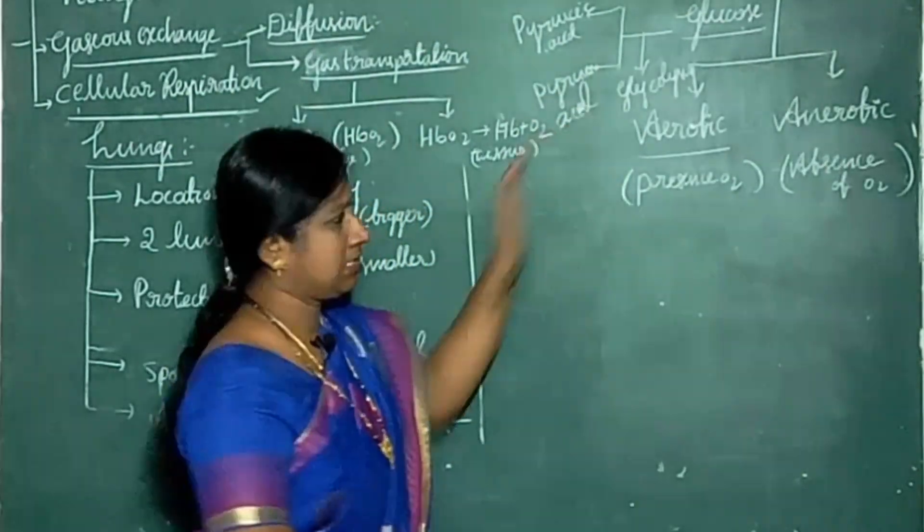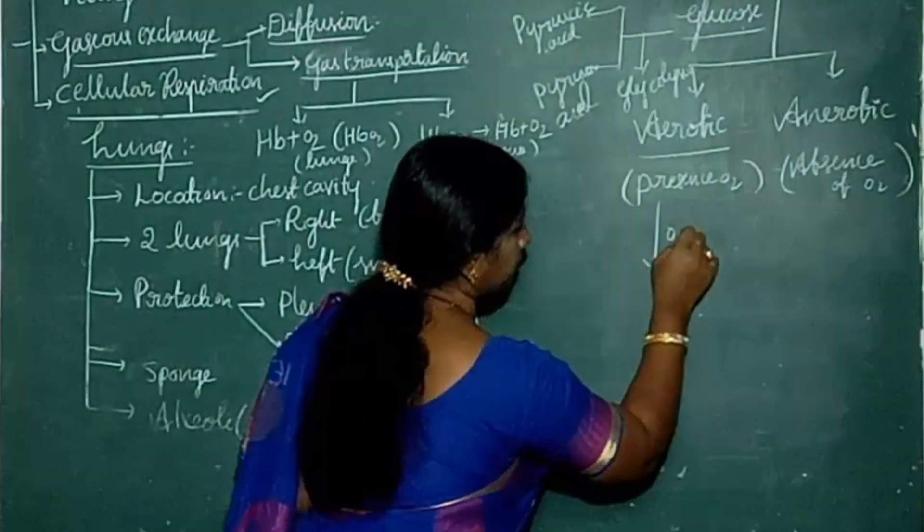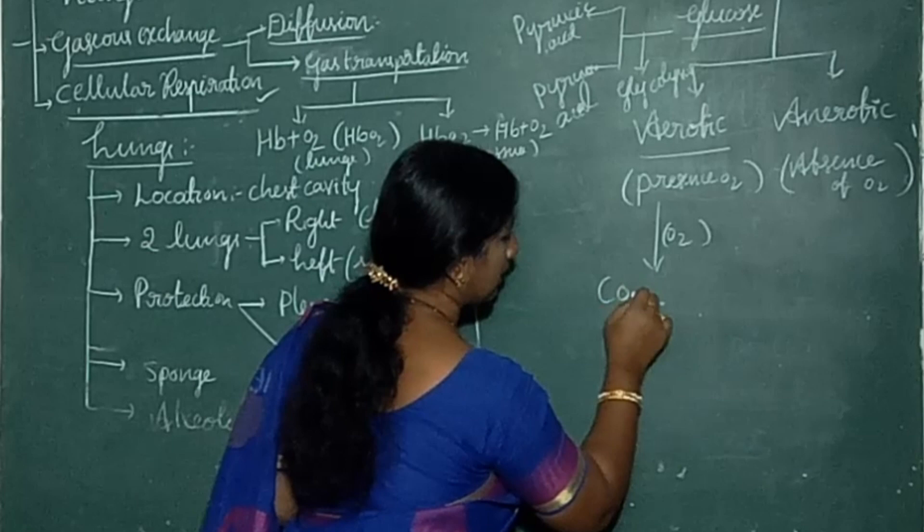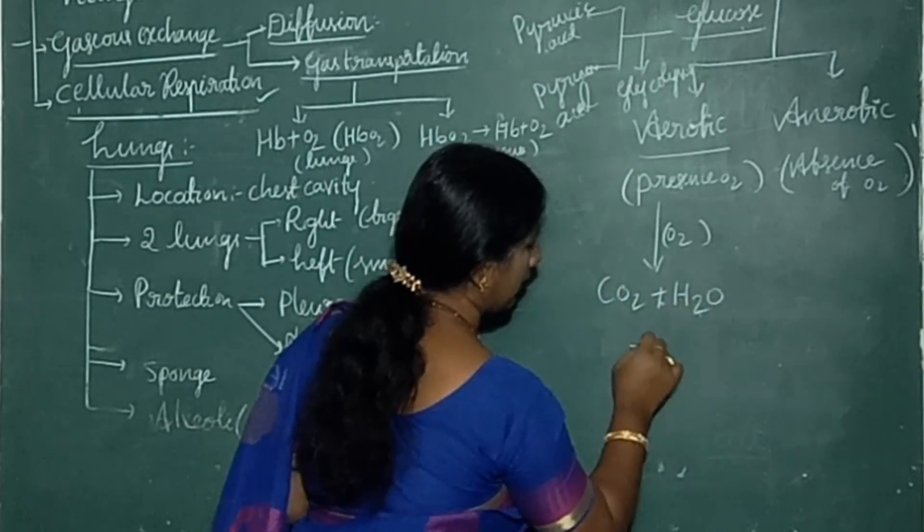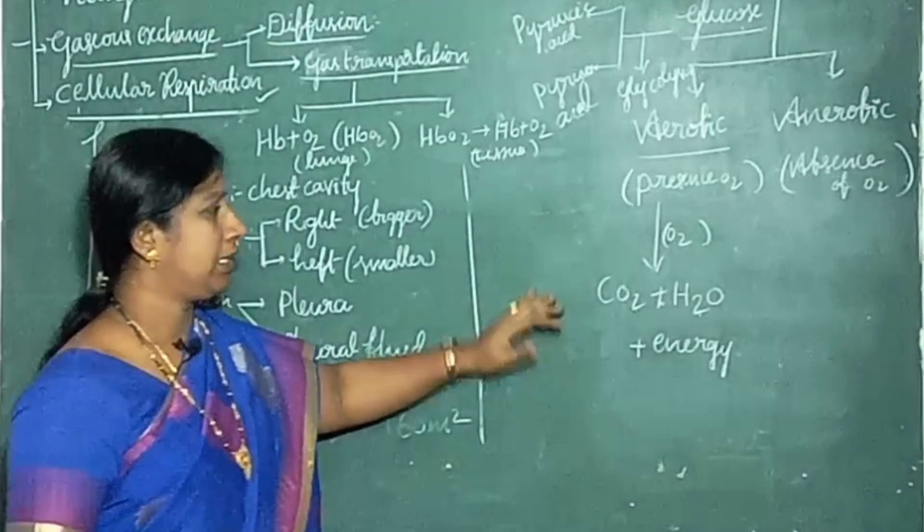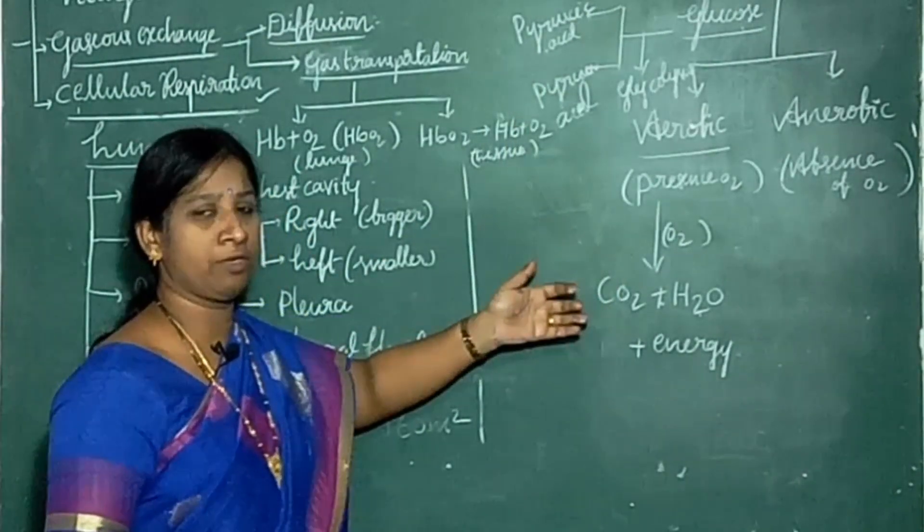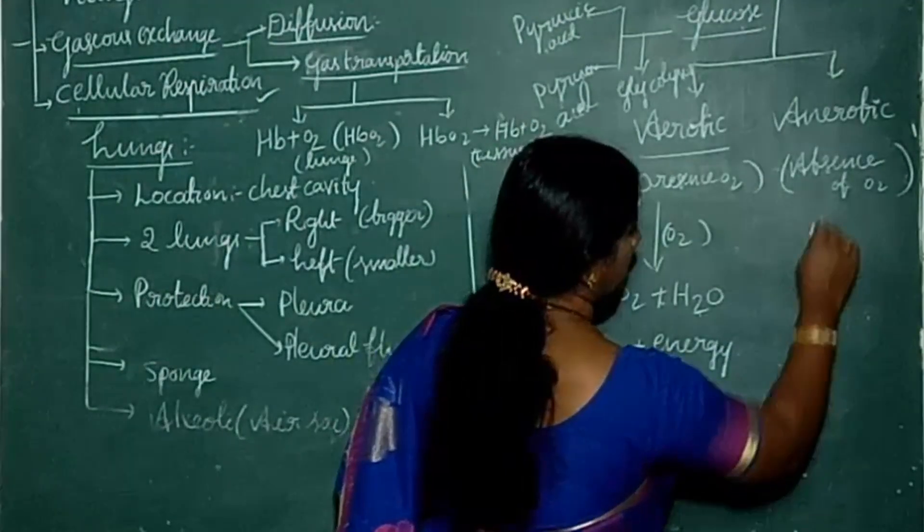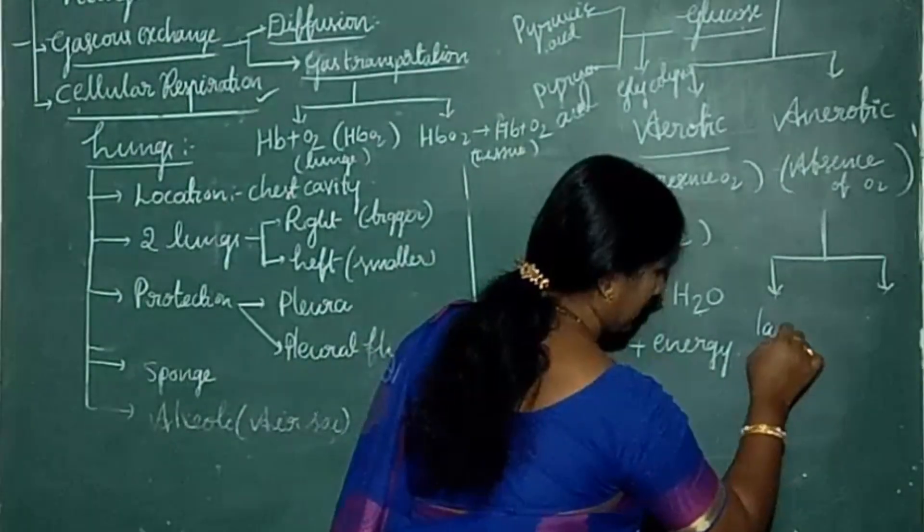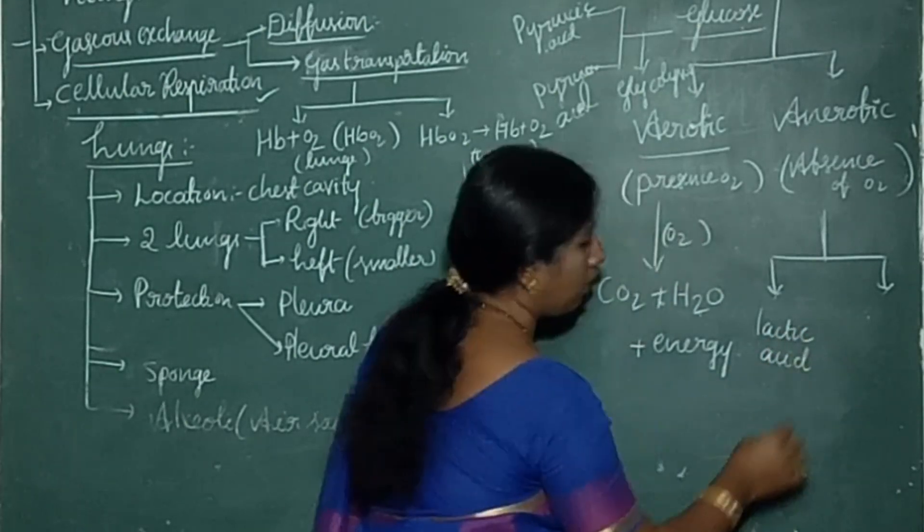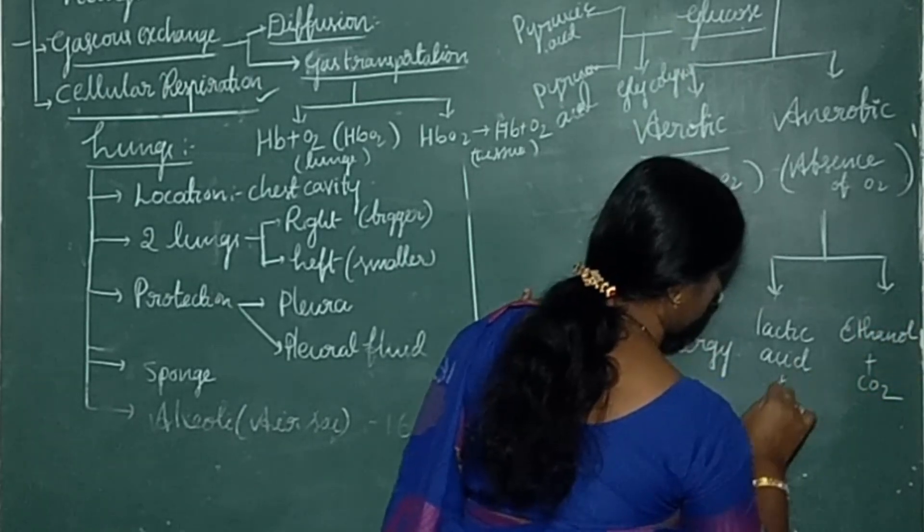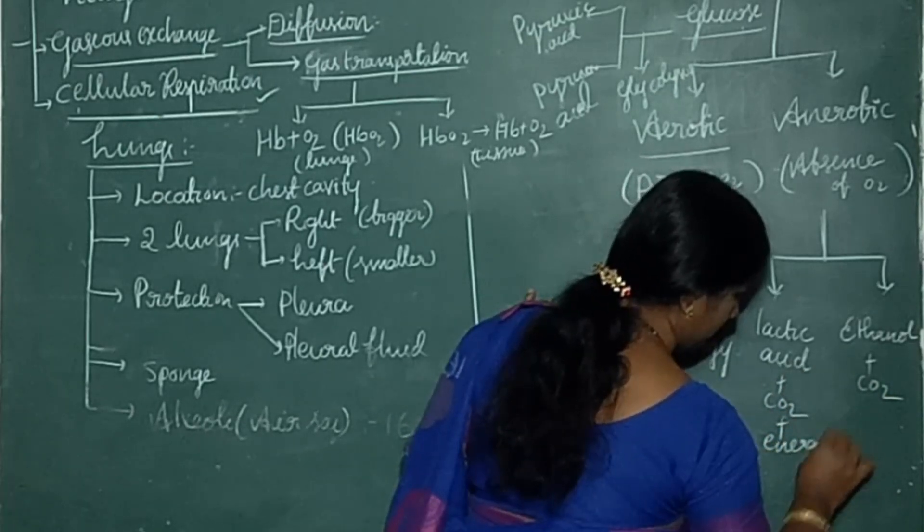After formation of pyruvic acid, in aerobic respiration it converts into CO2 and H2O and energy. This is aerobic respiration. But after formation of pyruvic acid, if there is no availability of oxygen, in anaerobic respiration pyruvic acid further divides into either lactic acid or ethanol and CO2 plus energy. Either aerobic respiration or anaerobic respiration, definitely some energy will be produced.